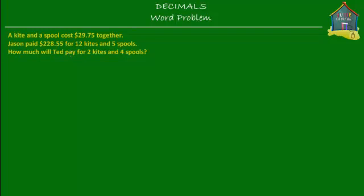Welcome to homecampus.com.sg. Let's solve this word problem. A kite and a spool cost $29.75 together. Jason paid $228.55 for 12 kites and 5 spools. How much will Ted pay for two kites and four spools?